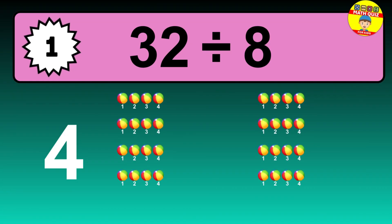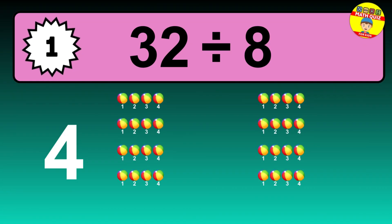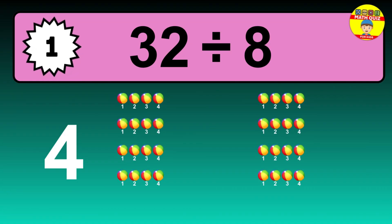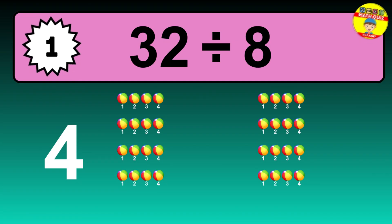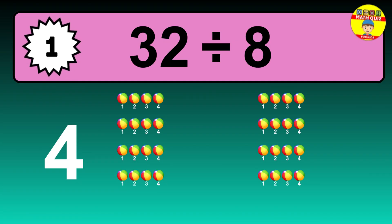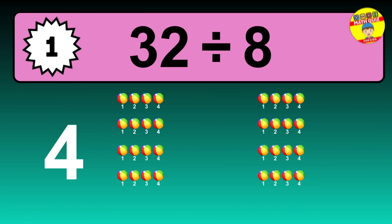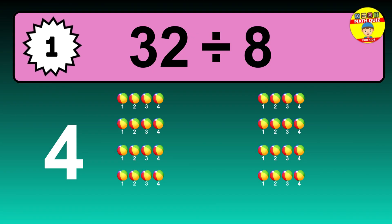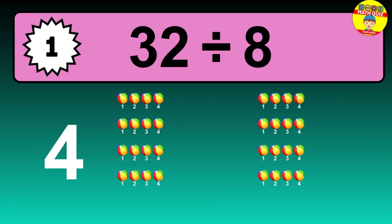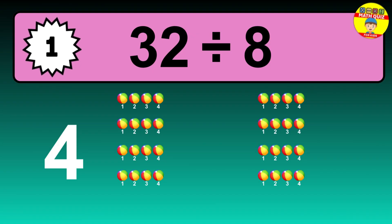Let's go to the solution. Divide the number 32 by 8. Each group contains 8 units, so dividing 32 by 8 results in 4 equal groups. Thus, the result is 32 divided by 8 equals 4.